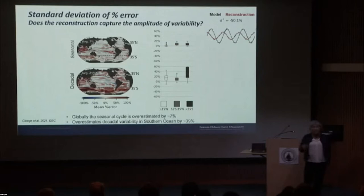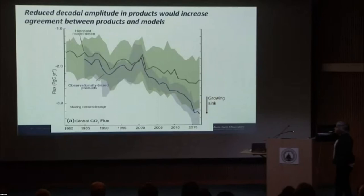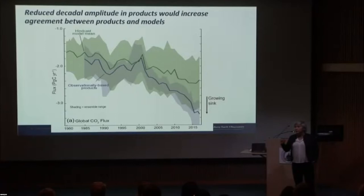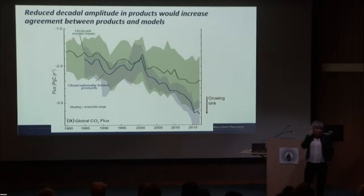However, decadal variability is overestimated at the global scale, and particularly in the Southern Ocean, where the mean across the 100 ensembles is a 40% overestimate of decadal variability. We show in the paper that adding some additional sampling to the Southern Ocean confirms it really is a sampling issue, not a reconstruction issue. If we could fill in the Southern Ocean with floats, we really could resolve this. I've evaluated not just SOMFFN but also XGBoost, random forest, and neural network algorithms, and show basically the same results in all of them — so all products probably overestimate decadal variability.